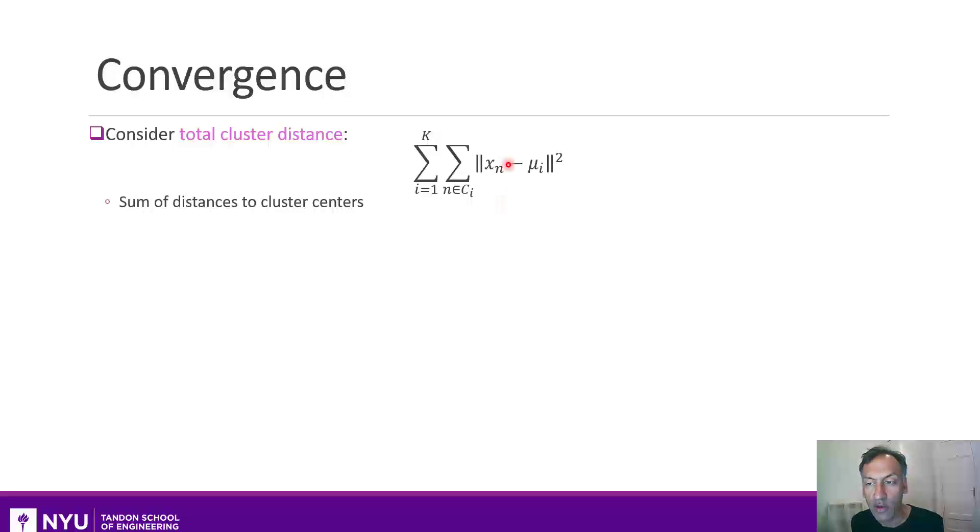To understand what k-means does, let's rewrite that total cluster distance this way. This is exactly the same expression. All I have done is I have introduced this variable r_ni and set it to be one when sample n belongs to cluster i and zero otherwise. And when you do this, this summation here will be exactly the same as this. And this function then is a function you can think of as a function of two variables: R, which is related to selections of which points are in which cluster, and mu, which is the centroids of these clusters.